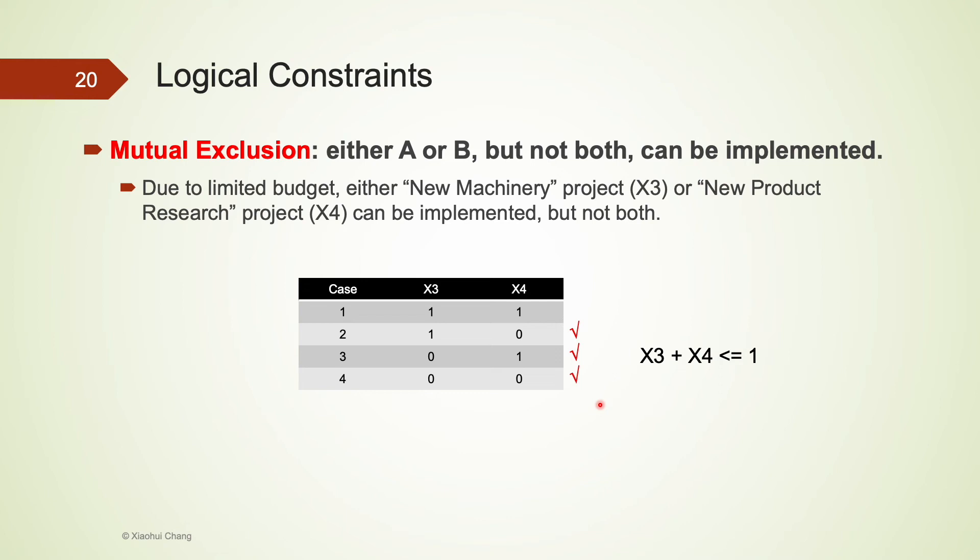But how do we represent these three cases using a mathematical expression? By manipulating the two variables x3 and x4, eventually we should be able to see that x3 plus x4 less than or equal to 1 is the constraint that will do the job. For example, 1 plus 0 is 1, that is less than or equal to 1. 0 plus 1 is also 1, that is less than or equal to 1. And the last case, 0 plus 0 is 0, that is certainly less than 1.